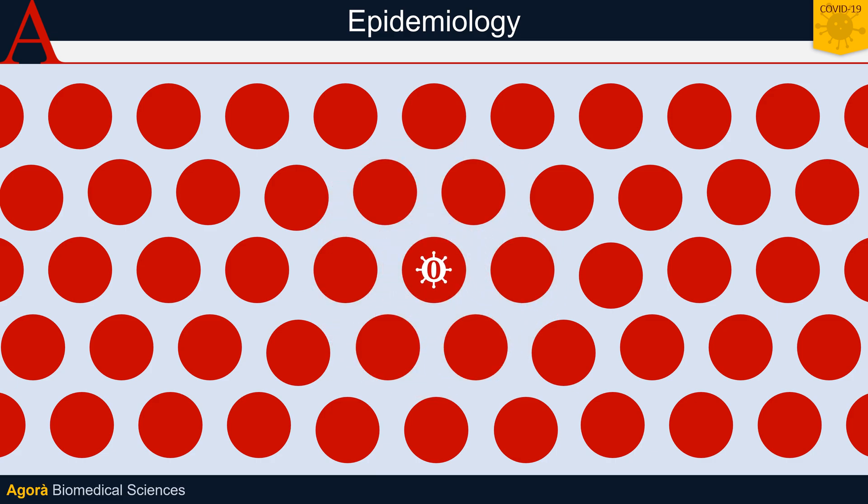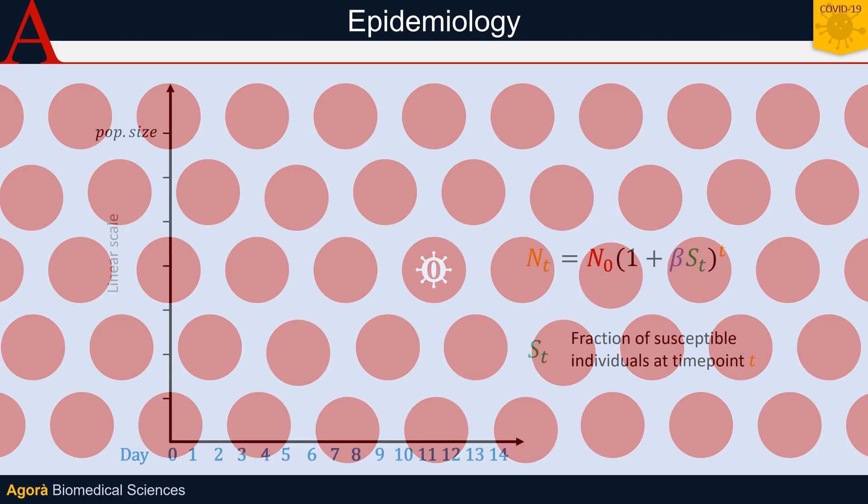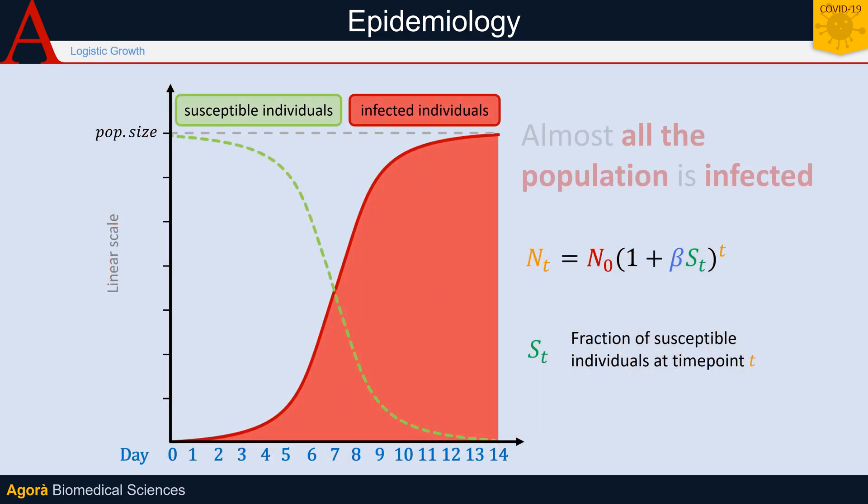When most of the population is infected, the epidemic spreads more and more slowly, because there are fewer and fewer susceptible individuals. If we take this factor into account, the growth curve of the infection takes a form called logistic. At first it grows exponentially, then it reaches a point of inflection and slows down until it stops. The logistic function therefore describes the natural growth of infections much better.